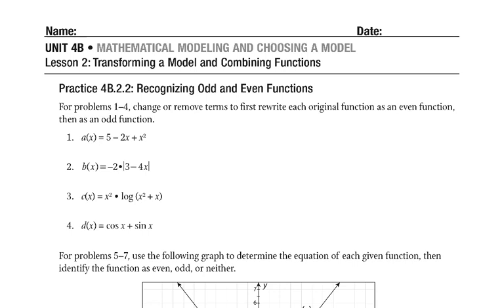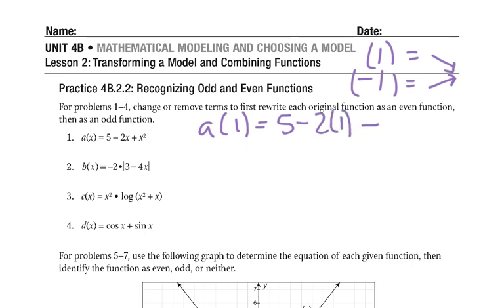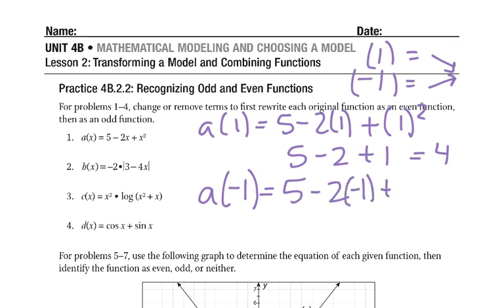Okay, so first let's see what we've got. So remember, for an even function, we have to have like a positive one and a negative one as inputs would give us the same answer as an output. Okay, so let's try one and negative one here. So we'd have 5 minus 2 plus 1. So that would be 3, 4. So 5 minus 2 times negative 1 plus negative 1 squared would give us 1 plus 2 plus 5. So that would give us 8. So that wouldn't work, would it?